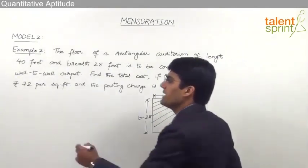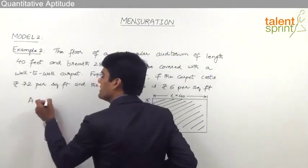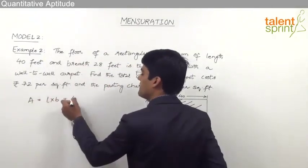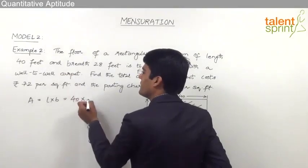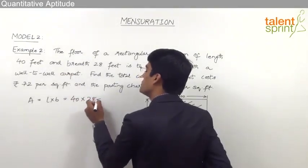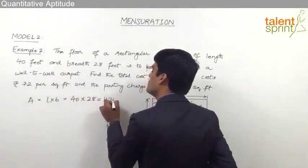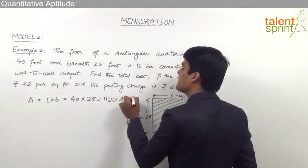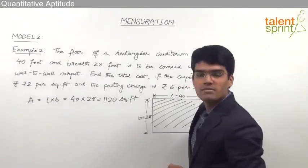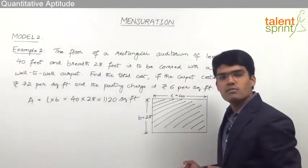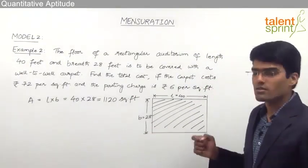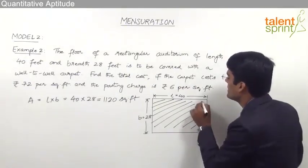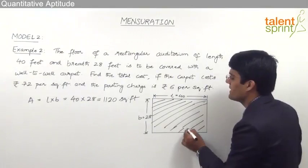The area of the rectangular auditorium equals length × breadth. The length is 40 feet and the breadth is 28 feet. So, 40 × 28 = 1,120 square feet. Since both dimensions are in feet, the area is 1,120 square feet — that is the total area of this auditorium.